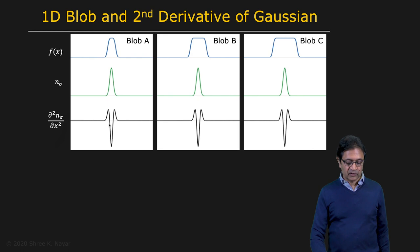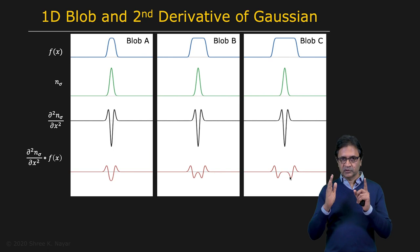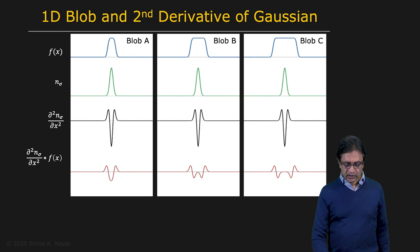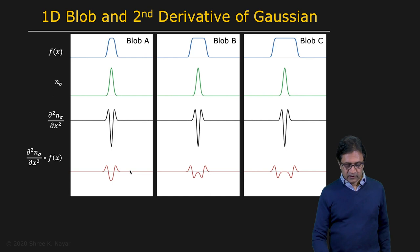If you apply the second derivative of the Gaussian to this image with 3 blobs, you end up with something that looks like this. For blob C, you get exactly what you expect: blob C is pretty wide, it has two edges — a rising edge and a falling edge — and you get two distinct zero crossings that are separate from each other. But when it comes to blob B and blob A, you see that these zero crossing responses begin to overlap, giving you different output shapes.